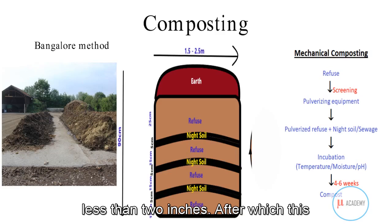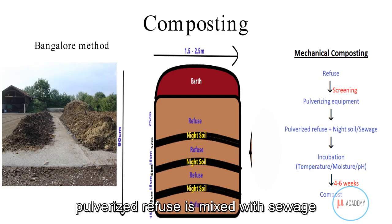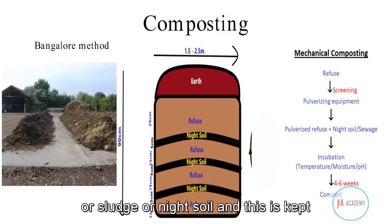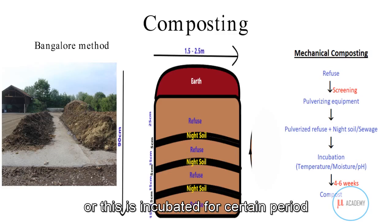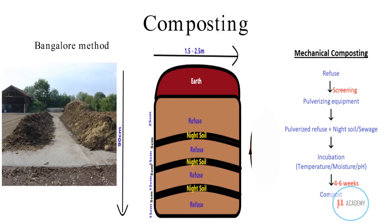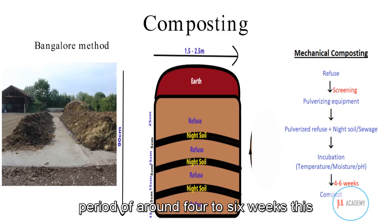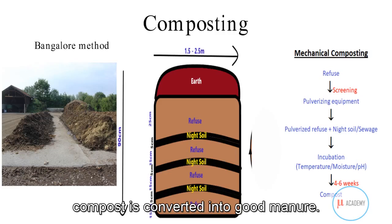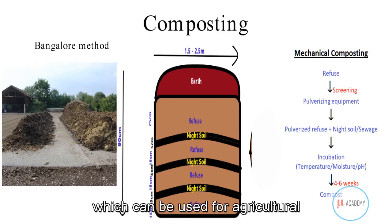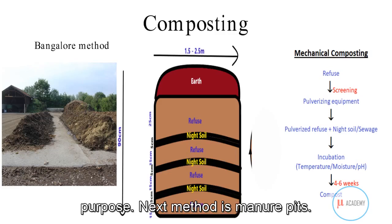The refuse is then pulverized using pulverizing equipment, reducing the size to less than two inches. The pulverized refuse is then mixed with sewage, sludge, or night soil and incubated for a certain period under controlled temperature, moisture, and pH conditions. After around four to six weeks, the compost is converted into good manure suitable for agricultural use.